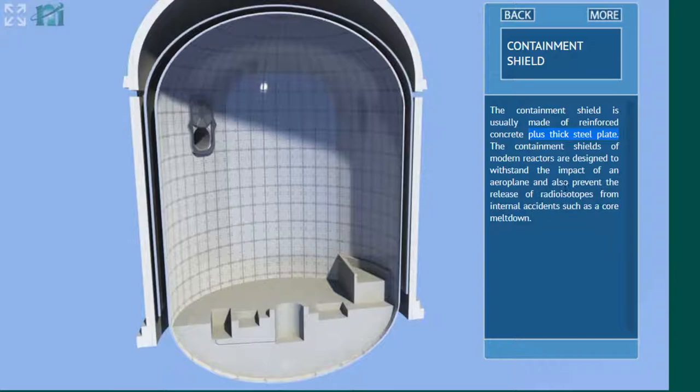So the last sentence says, also prevent the release of radioisotopes from internal accidents such as core meltdown. Well, this is deliberately not true, but I'm really amazed that they put these sentences here. The building is designed to hold the radiation that is released in a LOCA accident. Full stop. Nothing else. A LOCA accident, the volume of the building and all the protection systems are designed so the pressure will not surpass 0.5 bars. And the concrete is designed to withstand this pressure. That's it. There is nothing else than that.